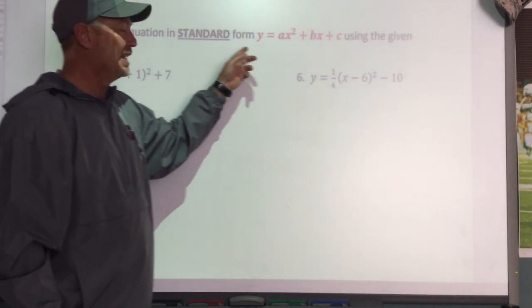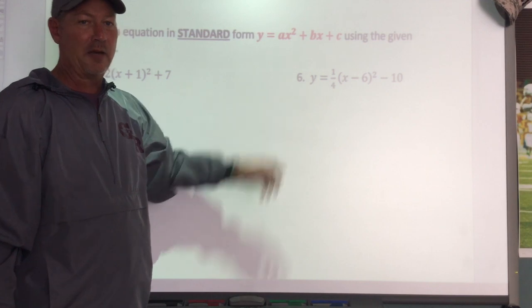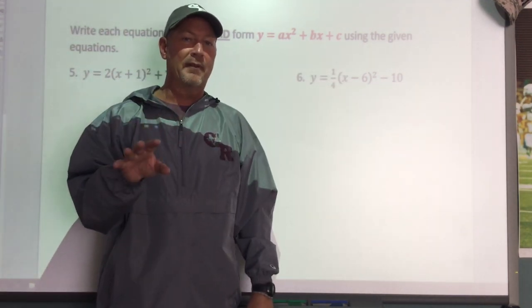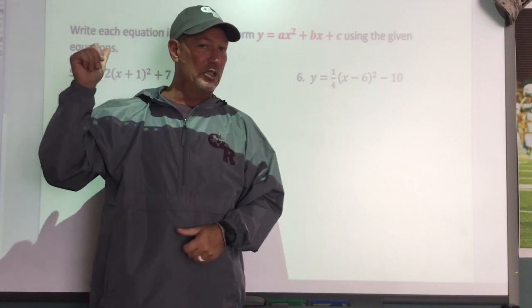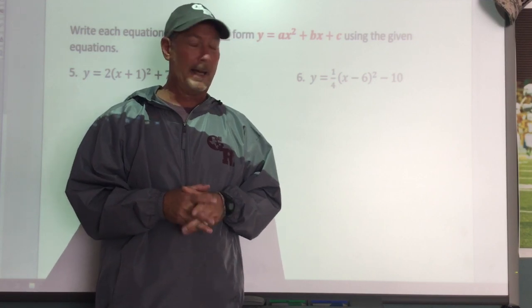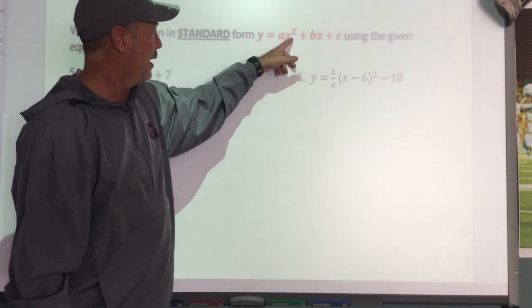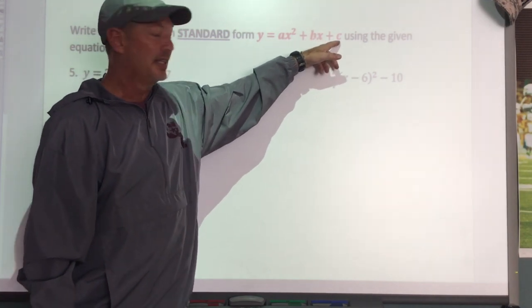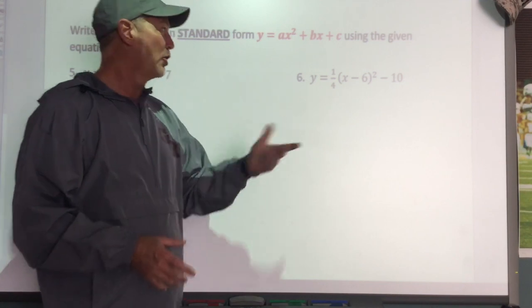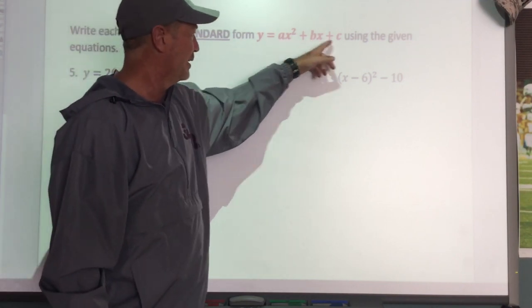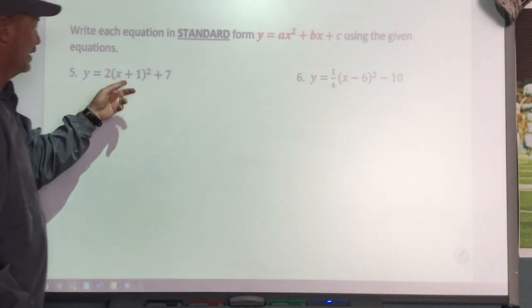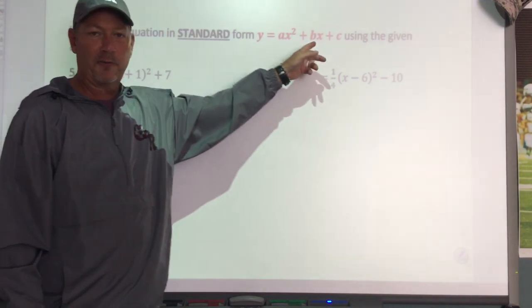Now they're going to ask us to write it in standard form. Standard form is y equals ax squared plus bx plus c. You have to memorize and know the difference between vertex form and standard form. What we're going to do is take vertex form and change it to standard form using order of operations.